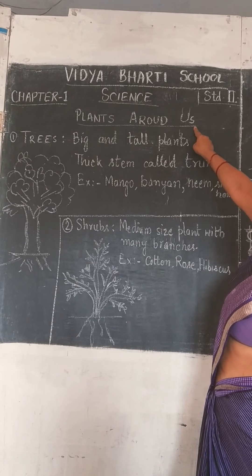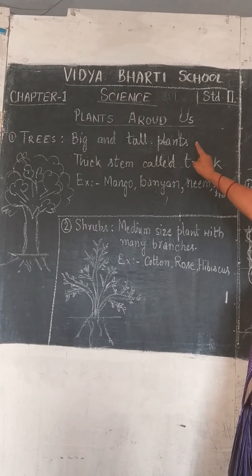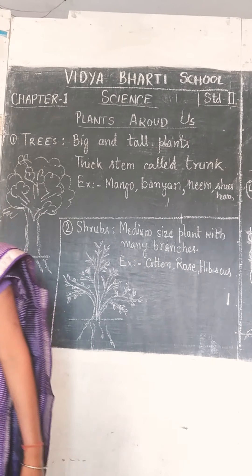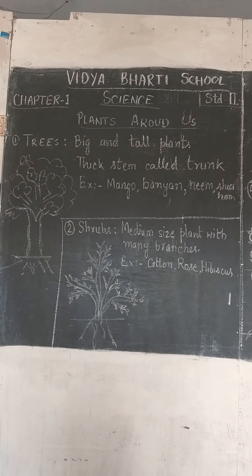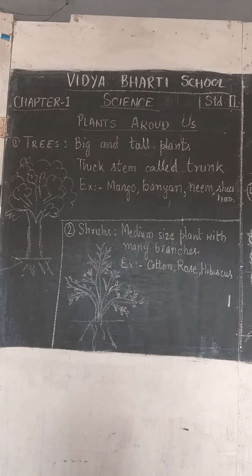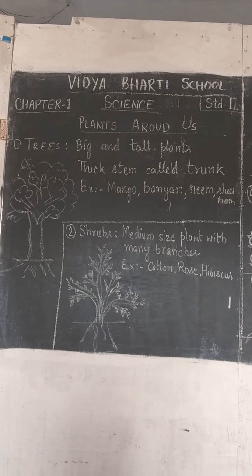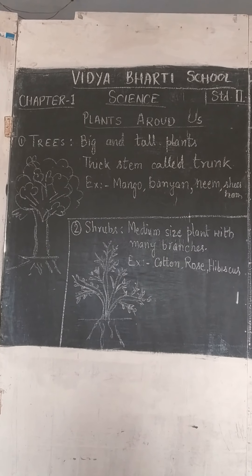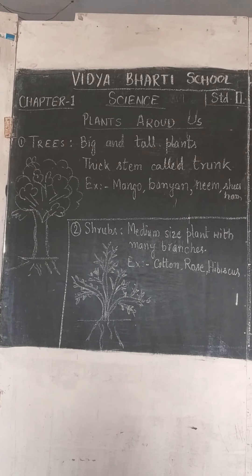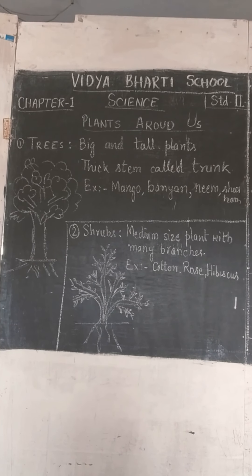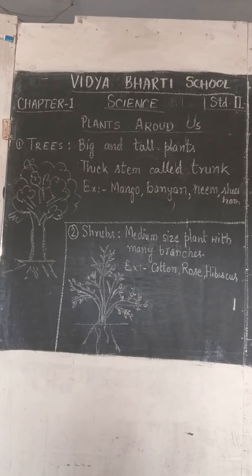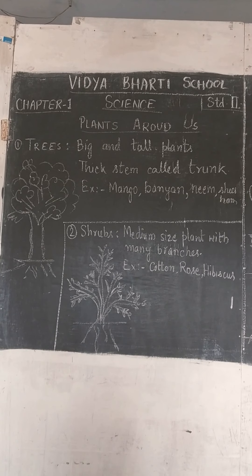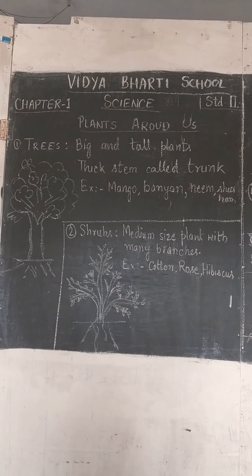हमारे चारों ओर बहुत सारे पौधे हैं, कुछ छोटे और कुछ ऐसे होते हैं जो बहुत ही सूक्ष्म होते हैं. परंतु जो हम देख रहे हैं अपने सामने, बहुत तरह के पौधे हैं, उनमें मुख्यतः पांच प्रकार के पौधों को बांटा गया है.